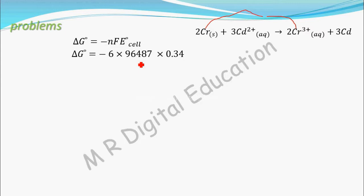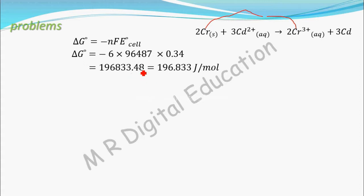When you simplify delta G naught = −6 × 96485 × 0.34, you get delta G naught = −196,833.48 J/mol. Delta G naught is usually expressed in kilojoules per mole, so dividing by 1000 gives −196.833 kJ/mol. That is the delta G naught value.